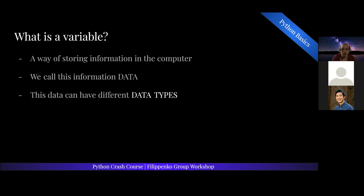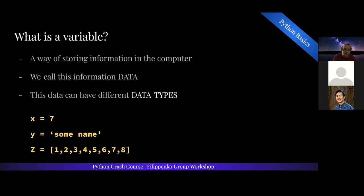So what is a variable? It's just a way of storing information in the computer. We call this information data, and this data can have different data types. These data types can be a wide range of different things. For example, X is equal to seven, Y can be equal to some string or some name, and Z can be a list of different numbers or letters or anything.